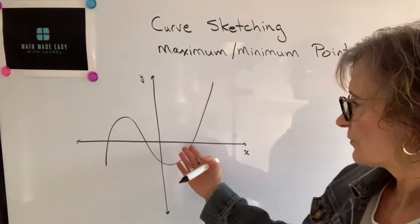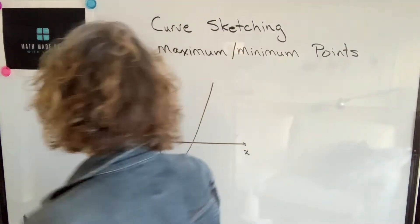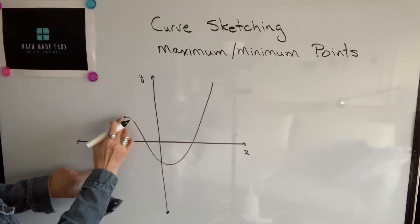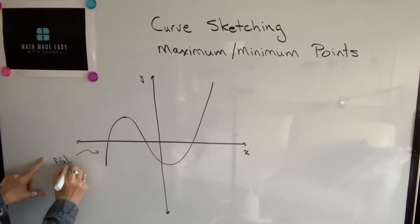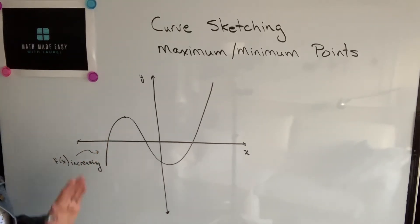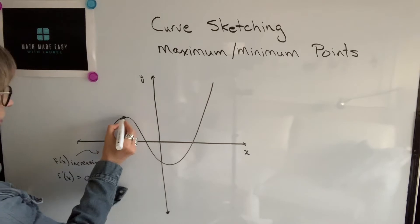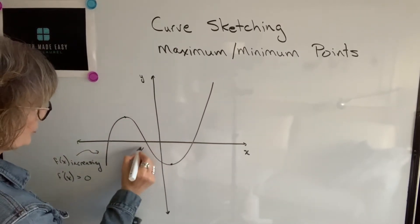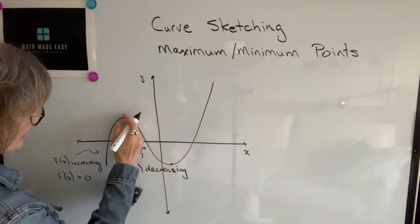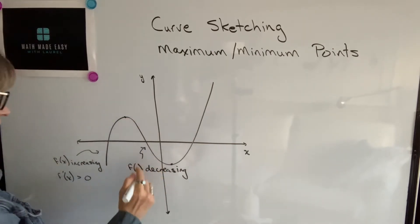If we take a look at this function here, what I want to point out is that in this interval up to this point, we know that this function is increasing — f of x is increasing — and we also know that the derivative, or the slope of the curve, is positive. If we look at this section from here to about this point, we see that the function is decreasing, and the slope of the tangent line to the curve anywhere in that interval would be negative.